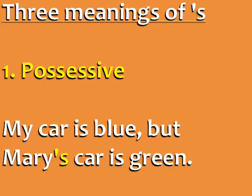Apostrophe S can mean three things in English. It can be a possessive. For example, my car is blue, but Mary's car is green.